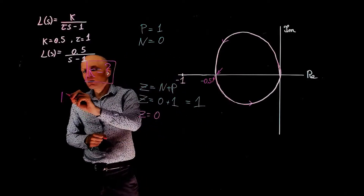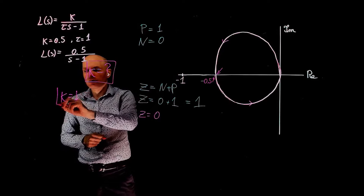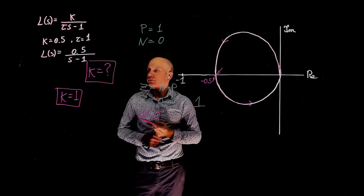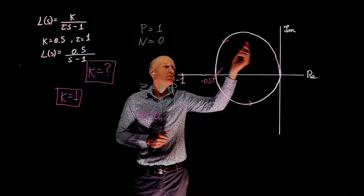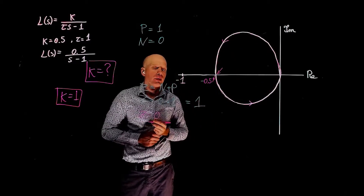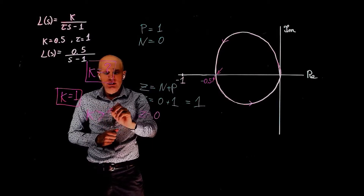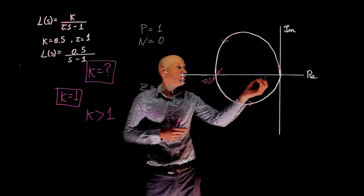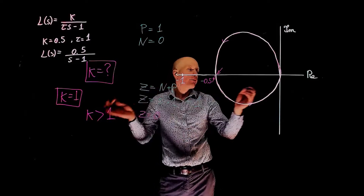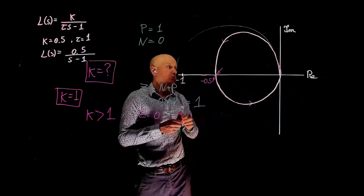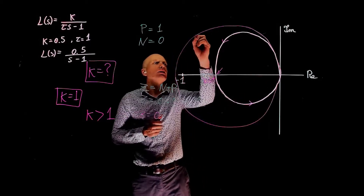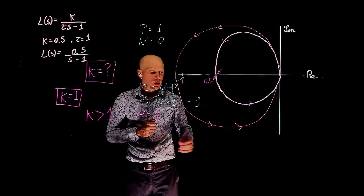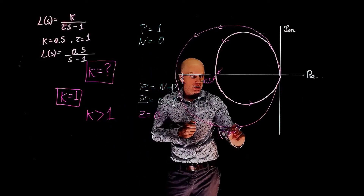So if k equals 1, the Nyquist plot will pass through negative 1. It will expand and pass through negative 1. This means that as soon as k is greater than 1, this Nyquist plot will extend to the left of negative 1 — something like that — and you can see it rotates in the counter-clockwise direction. This is for k greater than 1.